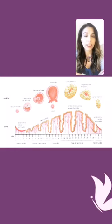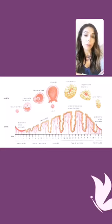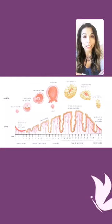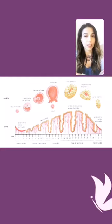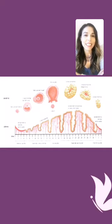We know that your fertile days consist of the day of ovulation — because the egg survives around 12 to 24 hours — and the five days before, because sperm can survive up to five days in the female reproductive system. So those are the six days when you can get pregnant in a month.